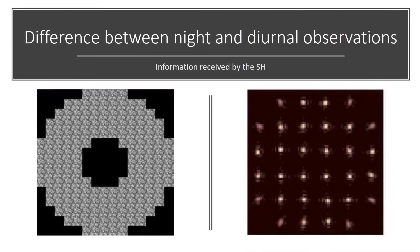In this new slide, we can see the difference in the received information between night and diurnal observations. On the right, there is an image of the light received by a 6x6 subaperture Shack-Hartmann, while on the left, there is a 15x15 subaperture Shack-Hartmann working on diurnal observations. As we can see in the example, in diurnal adaptive optics, the focused image of the subaperture is dominated by the sun.